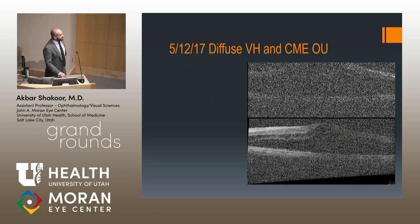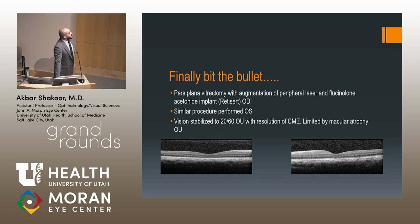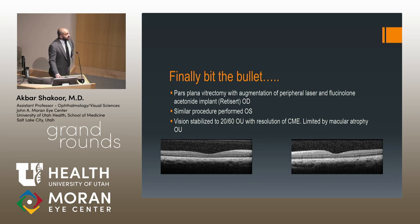There were hints of macular edema in both eyes, quite significant, but the view was limited by vitreous hemorrhage. So we finally bit the bullet — performed a pars plana vitrectomy with augmentation of peripheral laser and implanted a fluocinolone acetonide implant (Retisert) in the right eye, and performed a similar procedure in the left eye. Her vision stabilized to 20/60 in both eyes with resolution of CME, and her vision is now limited by macular atrophy.